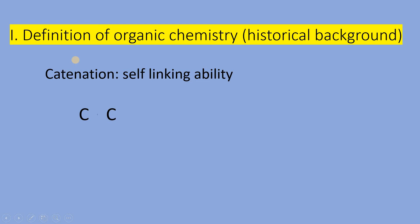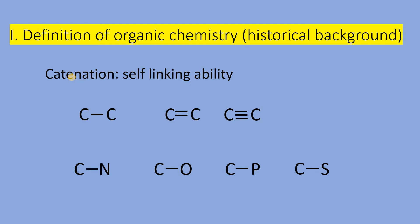Students, carbon due to its unique property of catenation forms covalent bonds with other carbon atoms. It also forms covalent bonds with atoms of a number of other elements such as oxygen, sulfur, phosphorous, and halogens. All these compounds are studied under a separate branch of chemistry — we call it organic chemistry. This was the earlier definition of organic chemistry.